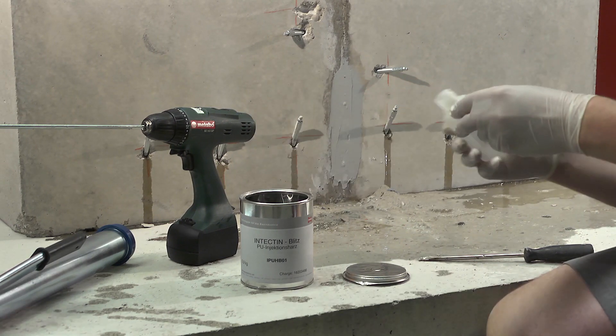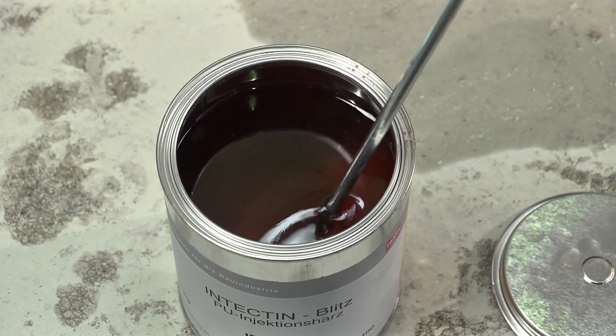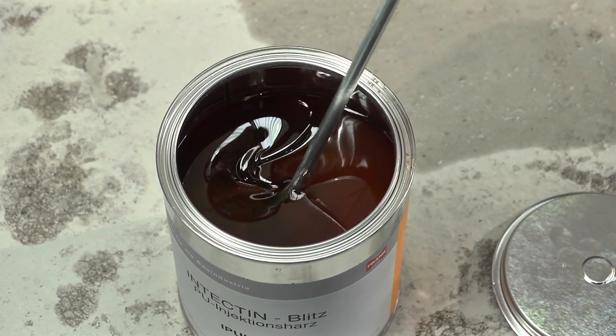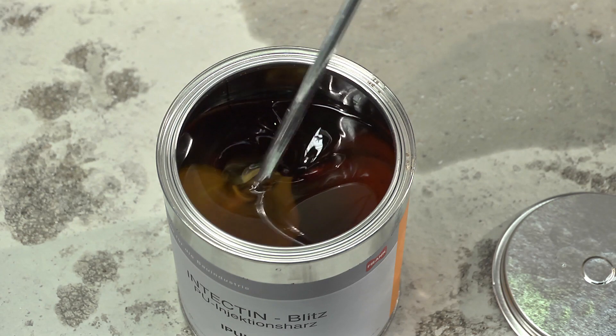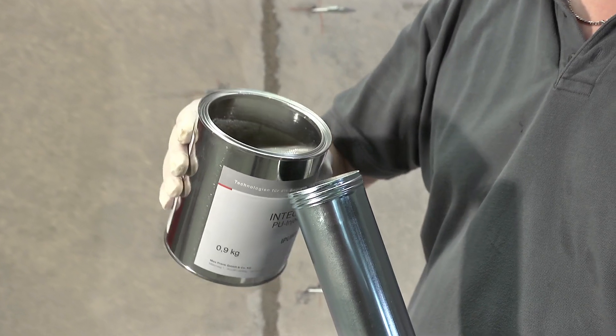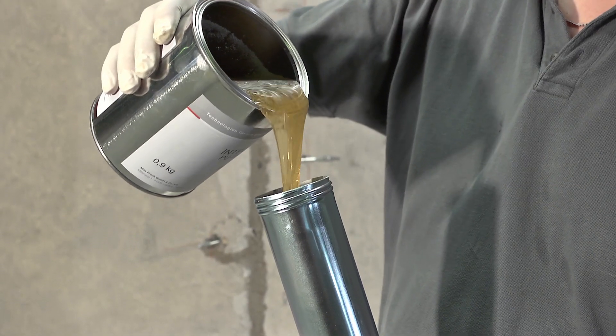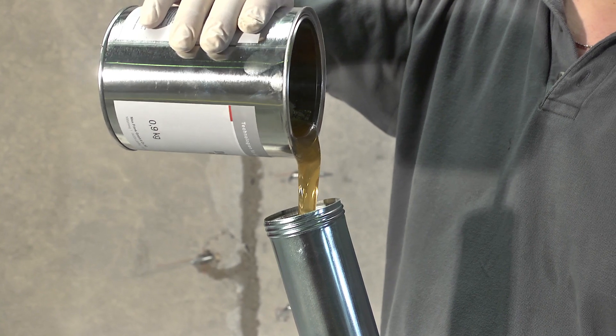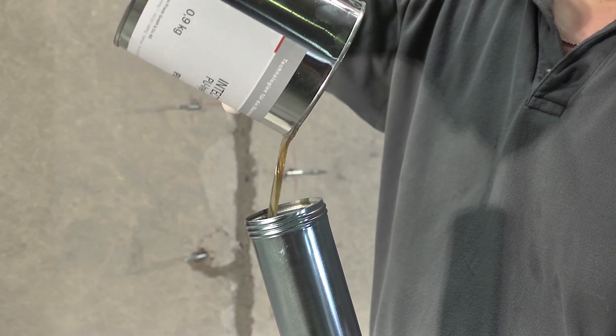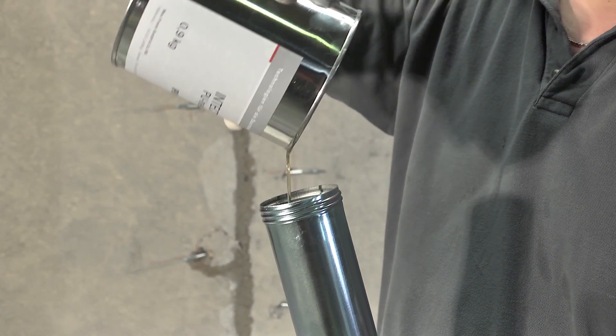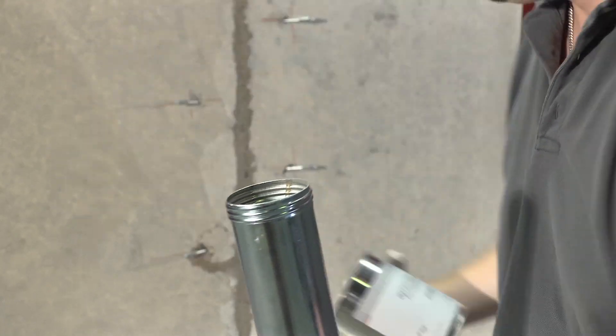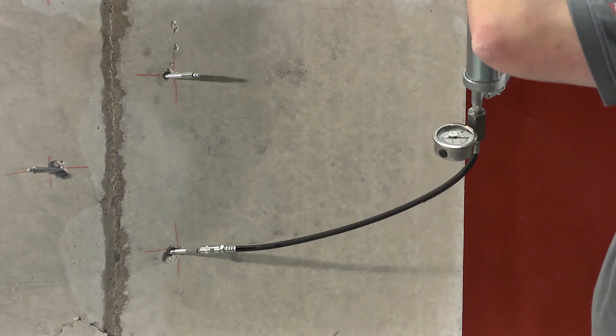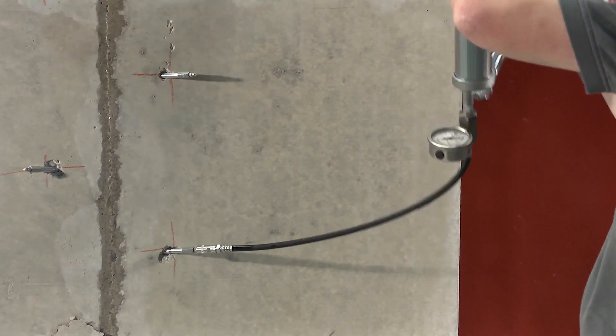The steps of this pre-grouting process are as follows: carefully mix the components of the Intectin Blitz resin, including the accelerator, using the recommended mixing equipment. The resin reacts on contact with the water, and in so doing it forms foam that stops the flow of water. Since the highly reactive Intectin Blitz may be activated by atmospheric humidity alone, always make sure to keep containers properly sealed.